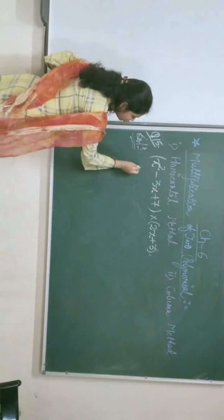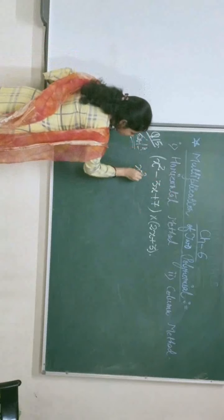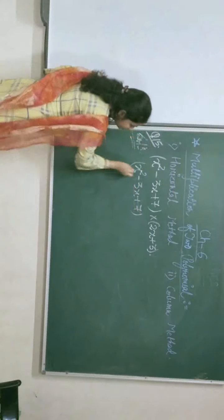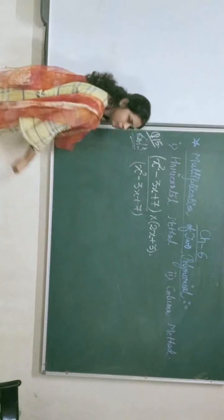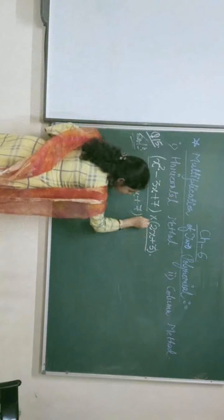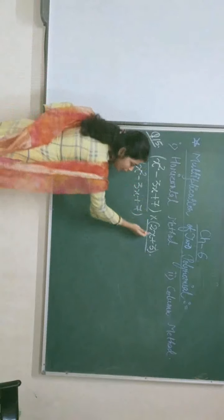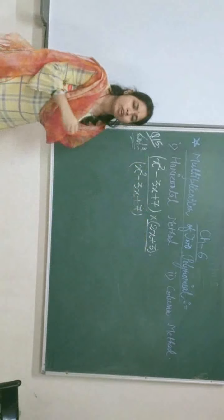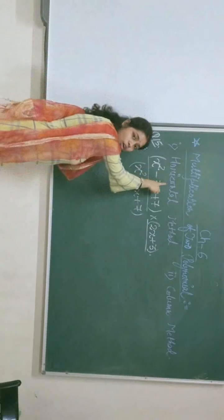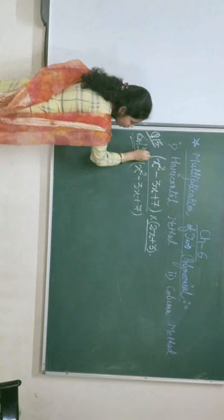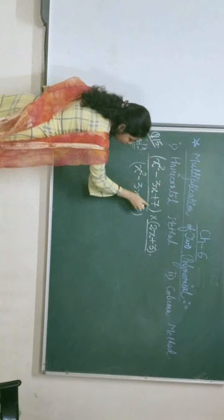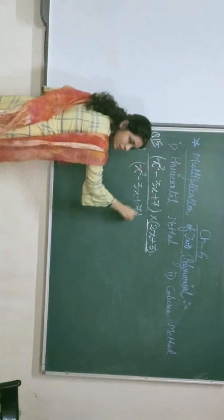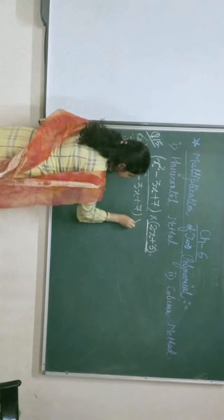At first, what we have to do? We have to multiply this polynomial with this polynomial by distributing the terms, and we have to write it in one line. We are multiplying this polynomial with this polynomial and we will distribute the terms of the second polynomial.